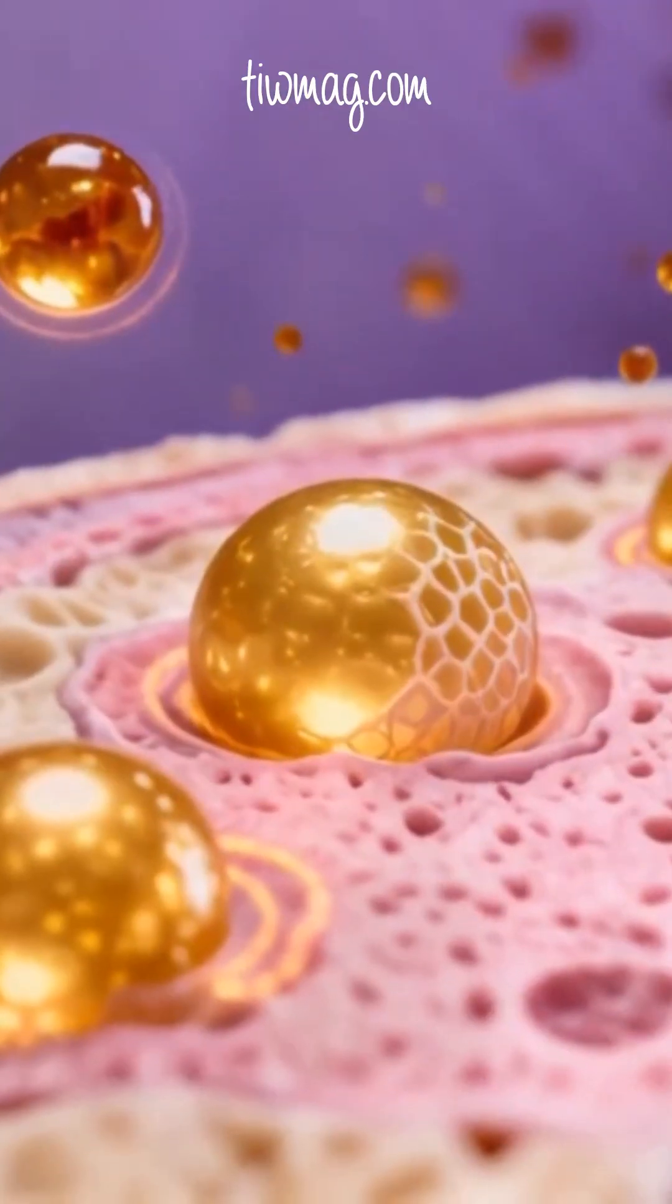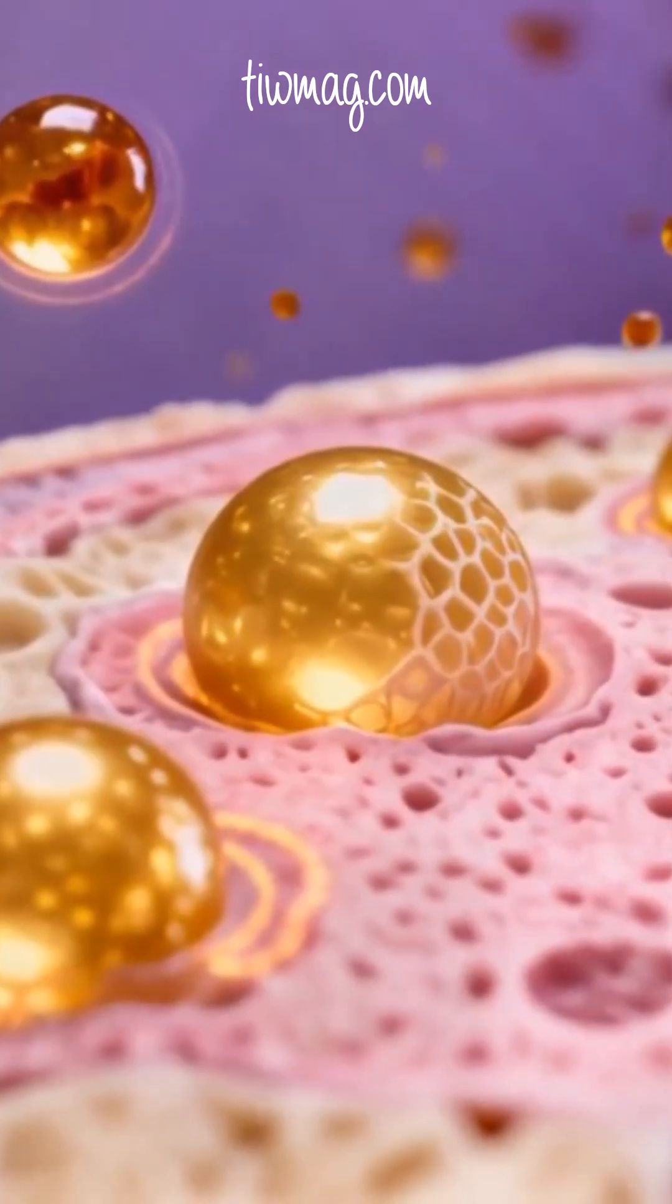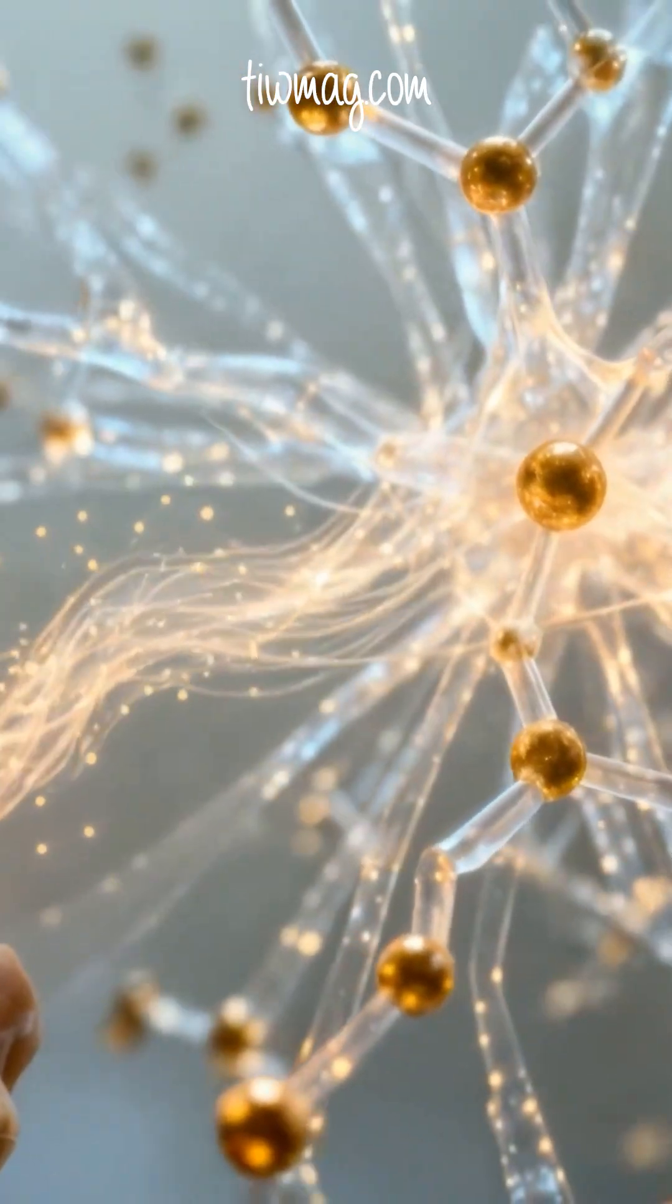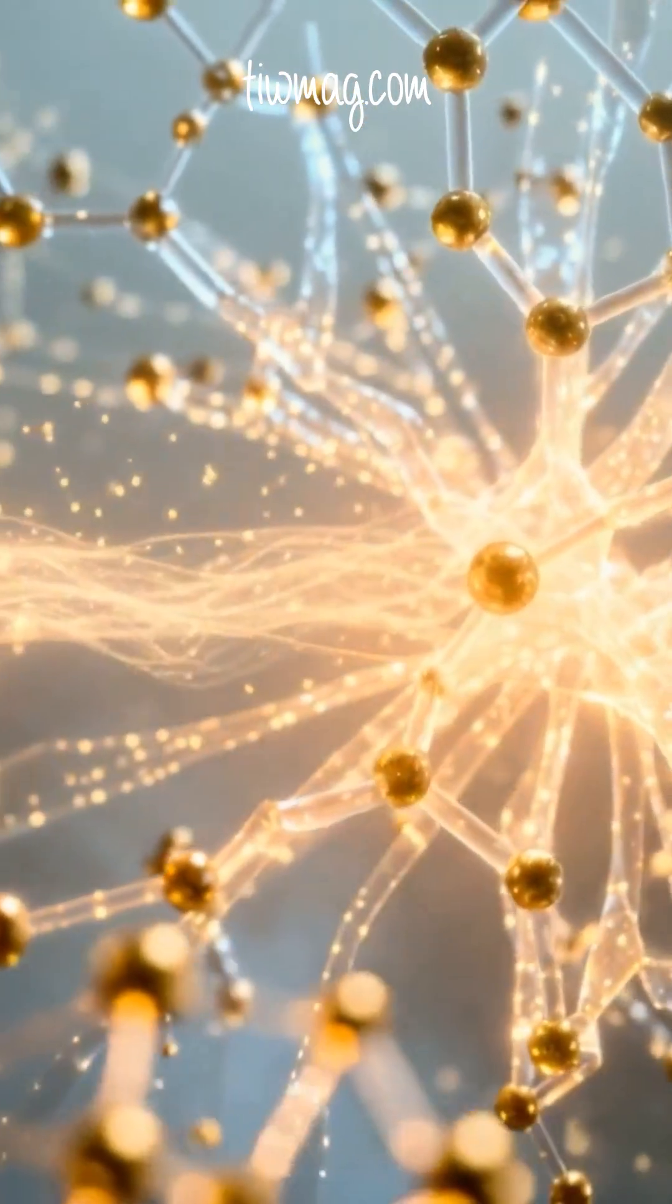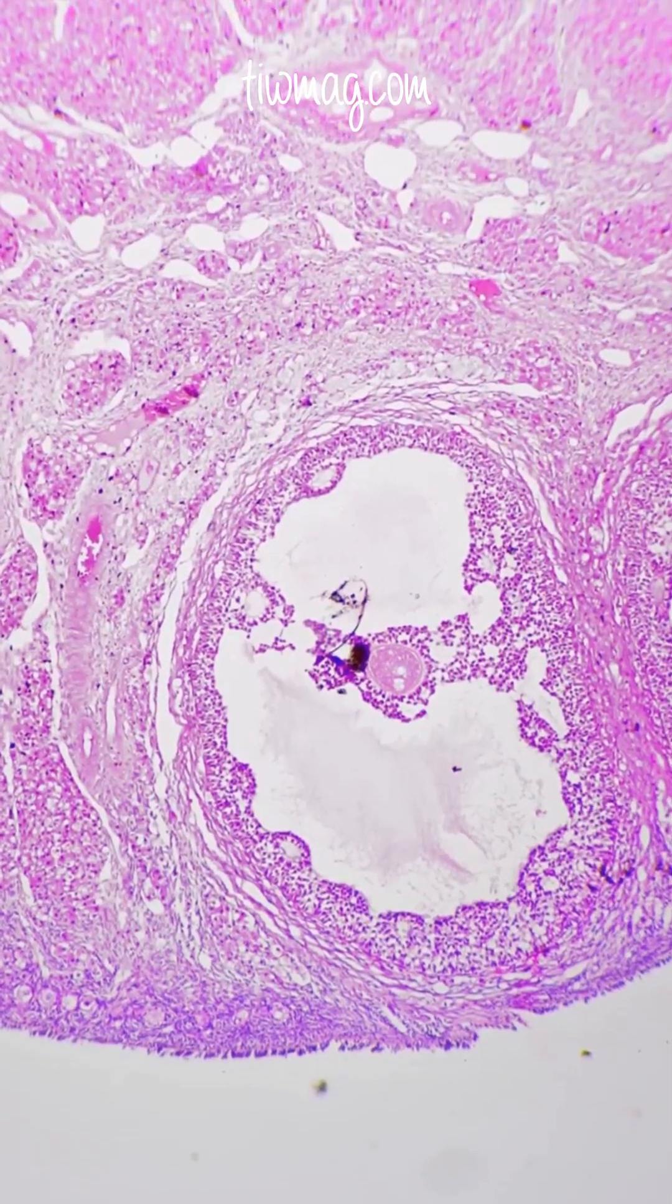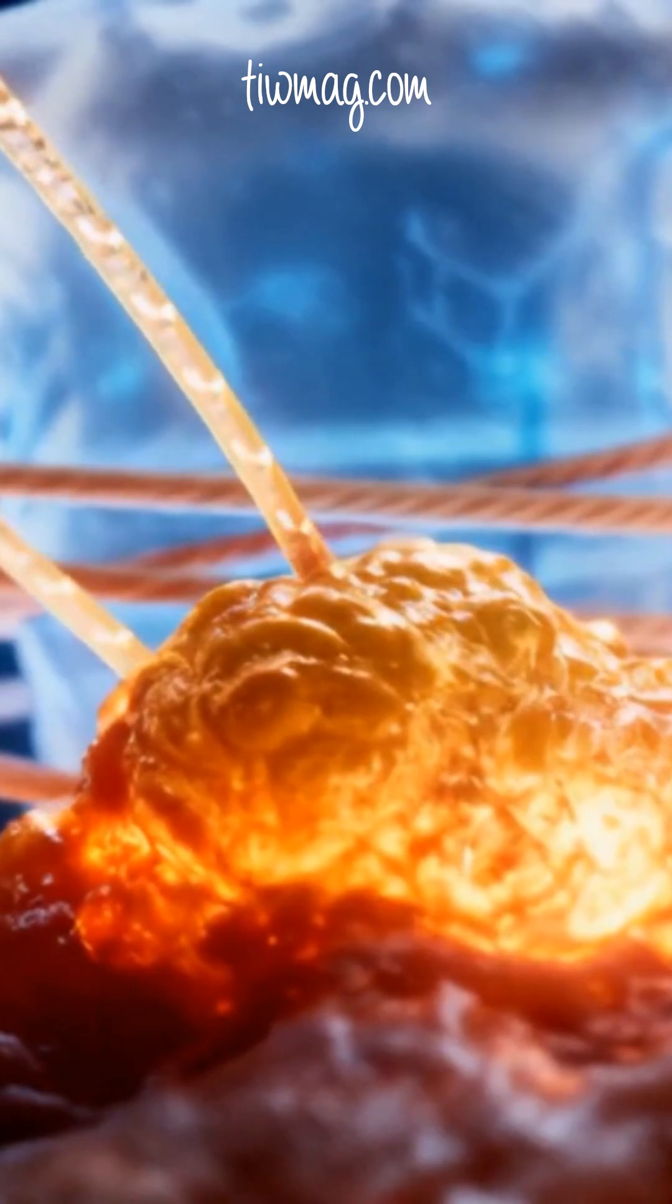When methylation is altered in these cells, genes that control steroid hormones become misregulated. Ovarian theca cells become hypersensitive, flooding the system with androgens. Meanwhile, ovarian granulosa cells struggle, disrupting follicle development and ovulation.